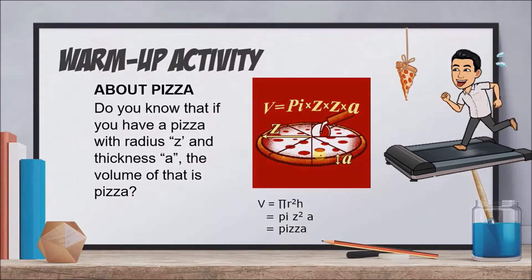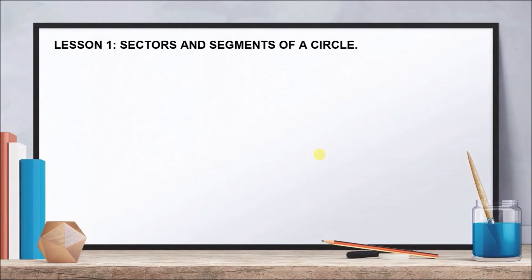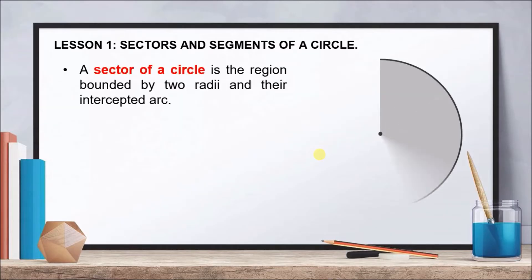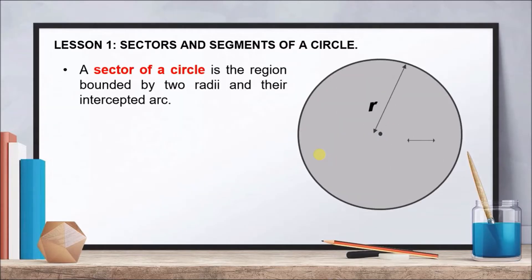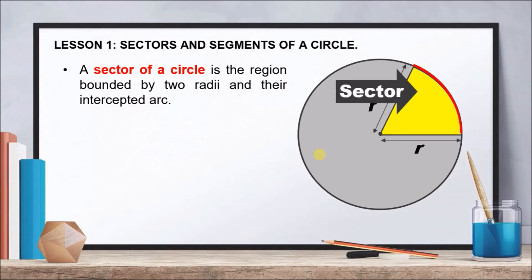We will start with Lesson 1, which is all about sectors and segments of a circle. A sector is actually a region bounded by two radii and an intercepted arc. The two radii and the red arc are shown in our drawing, and the shaded part in yellow is the sector of our circle.